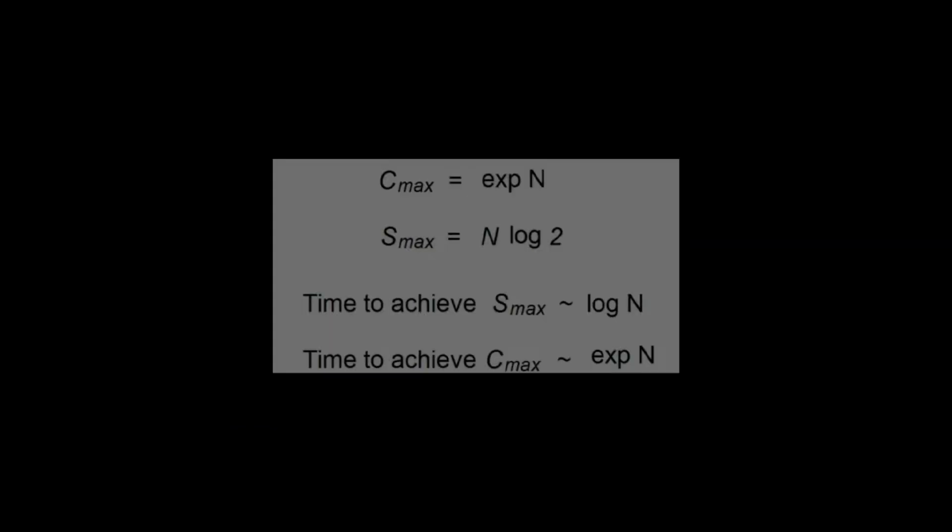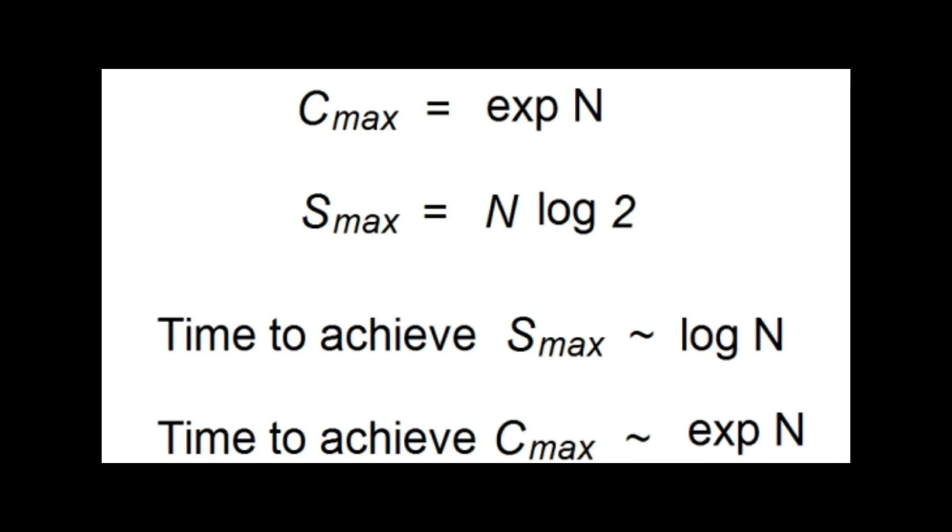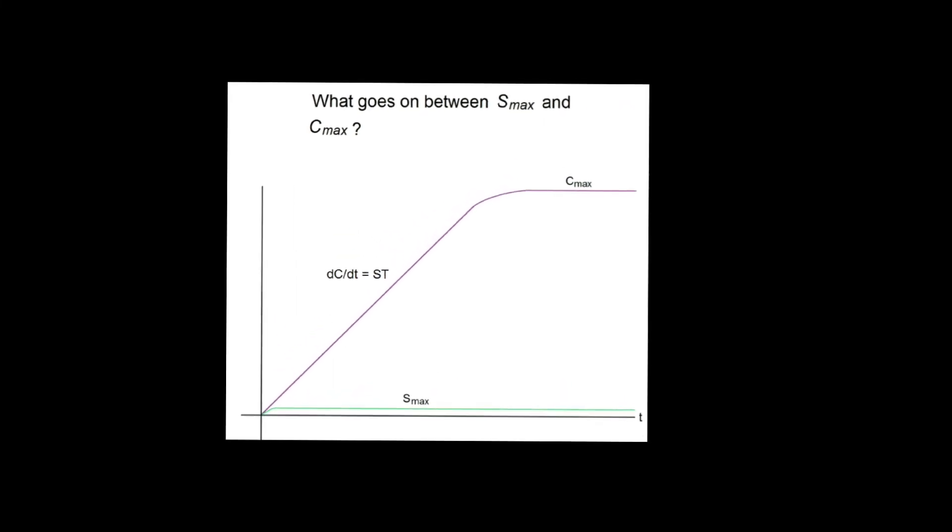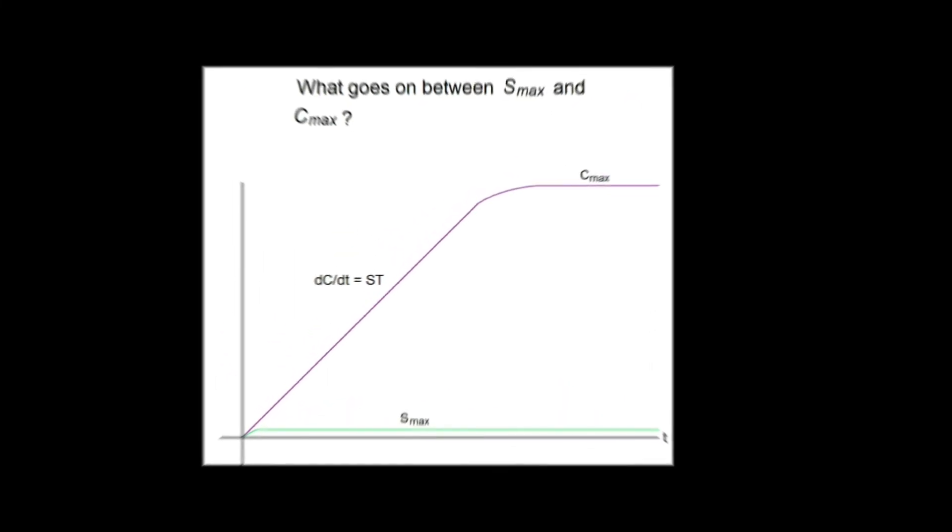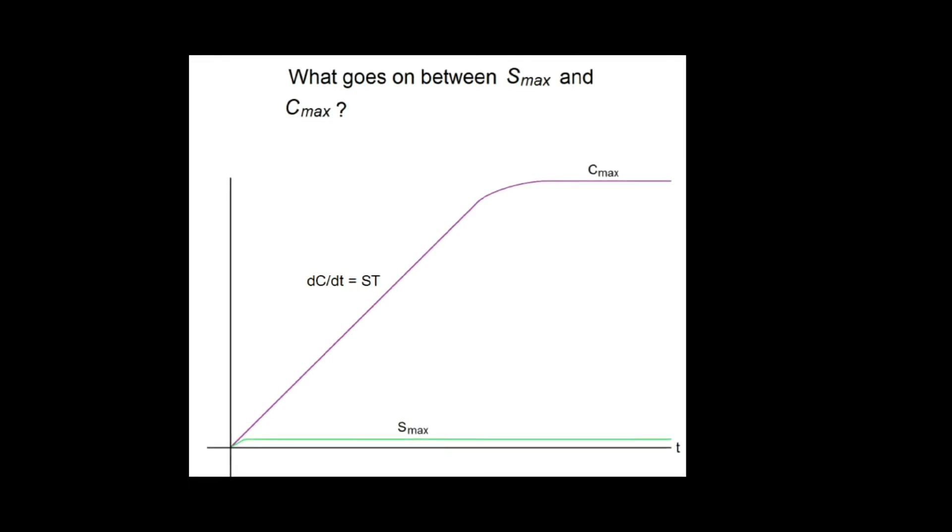In quantum complexity, the maximum complexity is of order exponential n, while maximum entropy is of order n. This is an extremely huge difference. Furthermore, in order to achieve this maximum entropy, you only need log n times. But maximum entropy is achieved when you have thermal equilibrium. We can calculate it and in fact this is really quick, like milliseconds for black holes of solar mass. But time to reach this maximum complexity is of order exponential n.